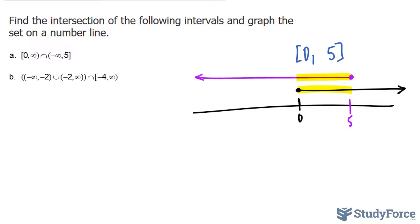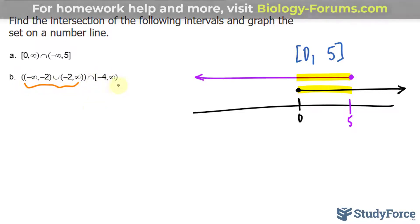Let's move on to question B. Reading this carefully, we want the intersection of all of this with negative four and infinity. Let me show you what that looks like on a number line. So on a number line, if we set that as zero,